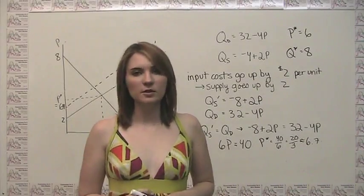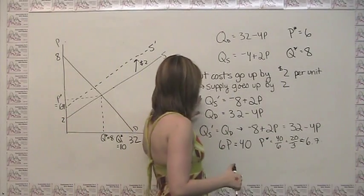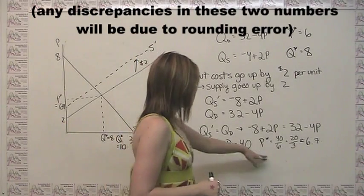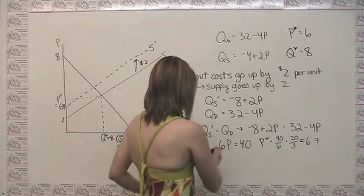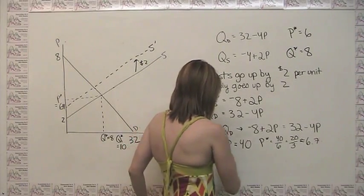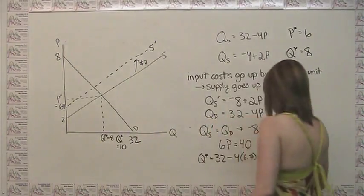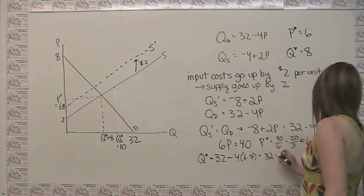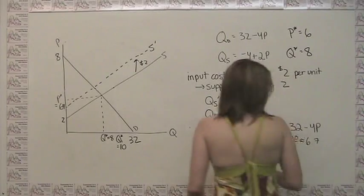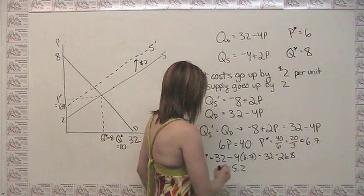Like always, we can find our equilibrium quantity either by plugging the equilibrium price into this supply equation or into this demand equation. So here we can say that our equilibrium quantity is equal to 32 minus 4 times 6.7, which is just 32 minus 26.8 approximately, which is equal to about 5.2.